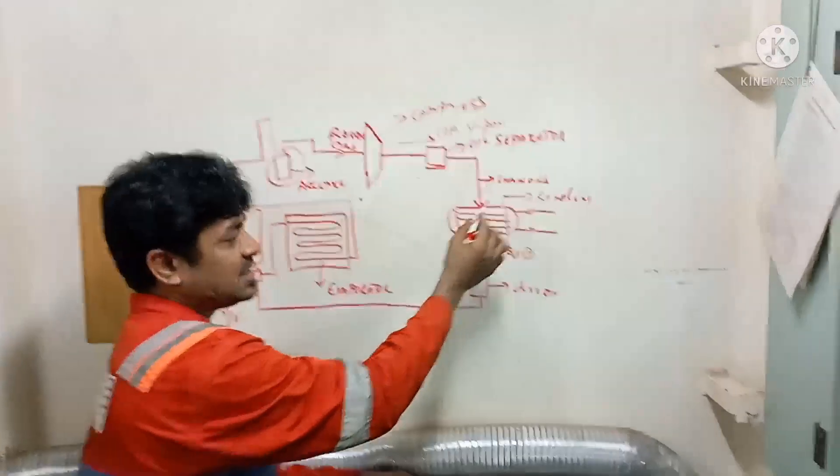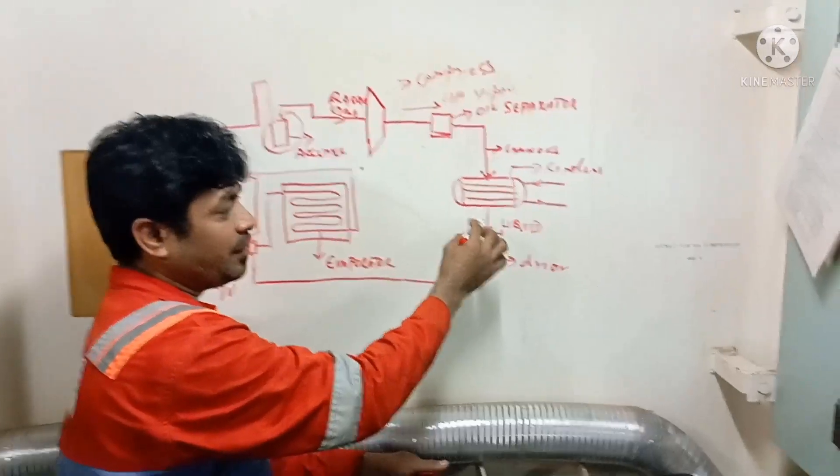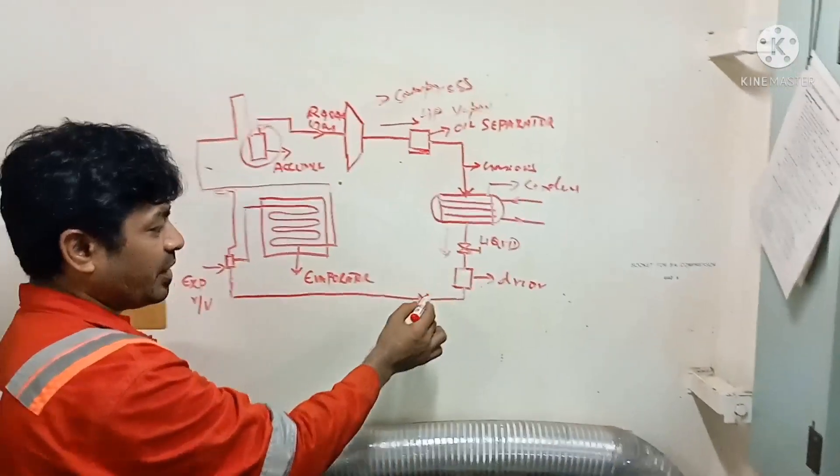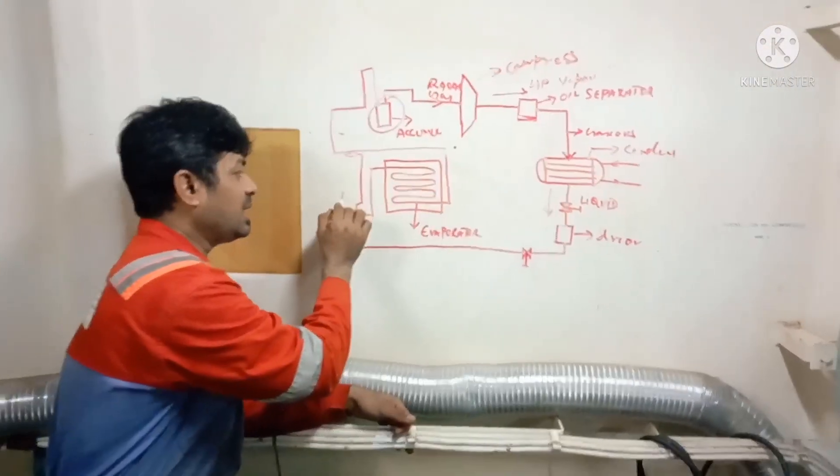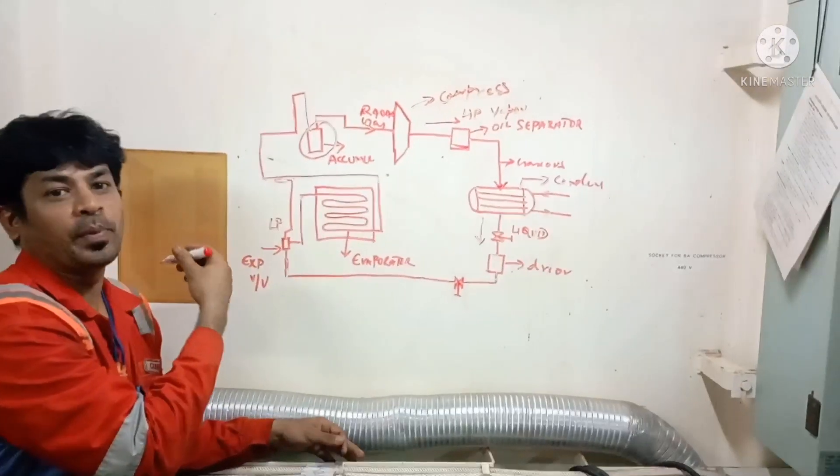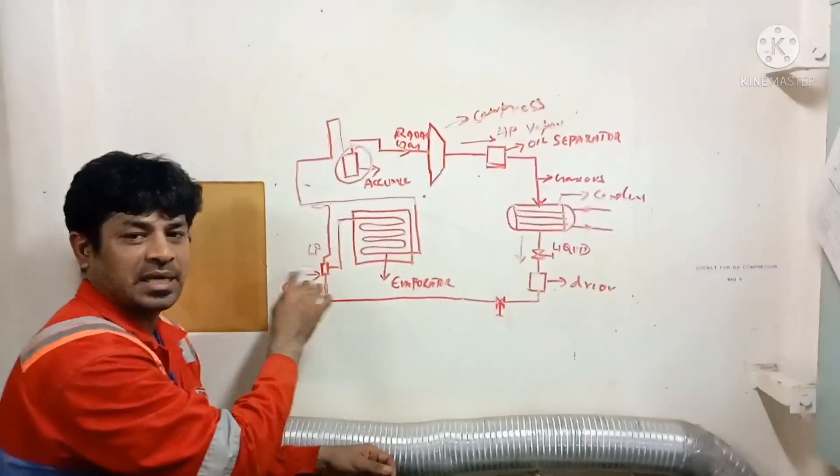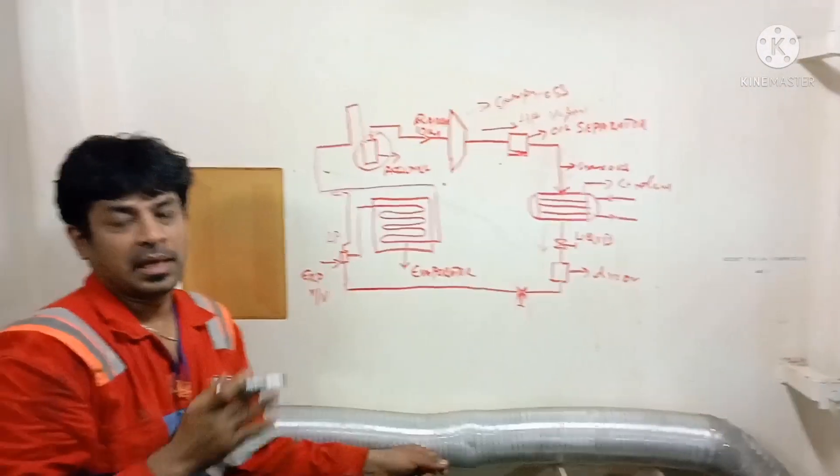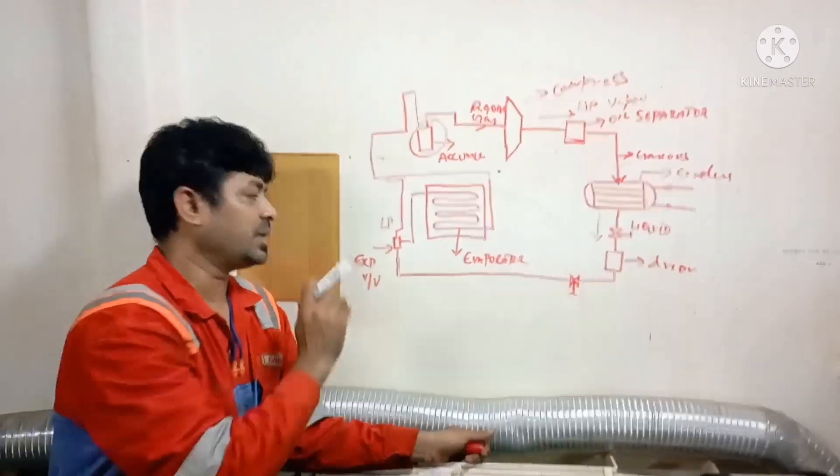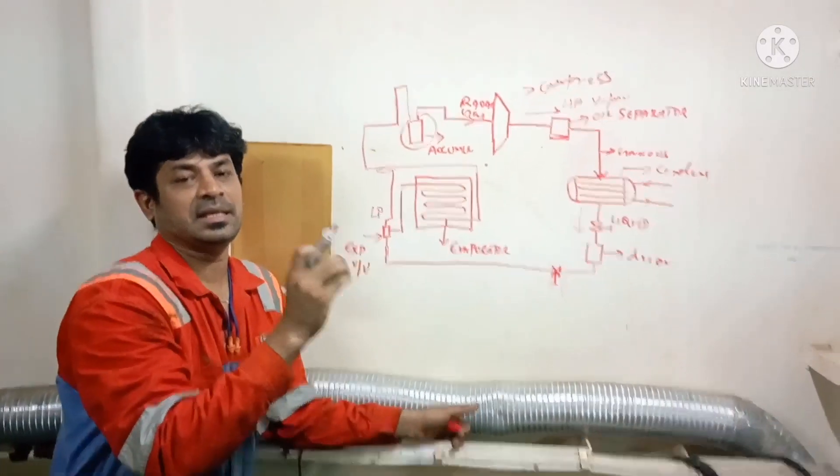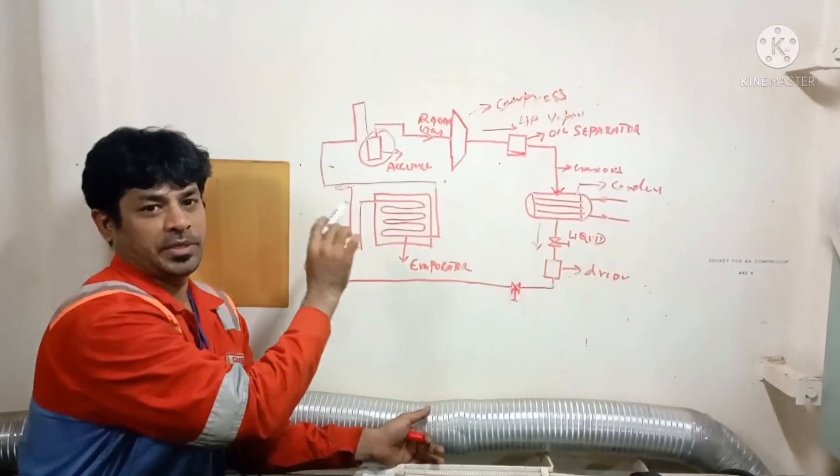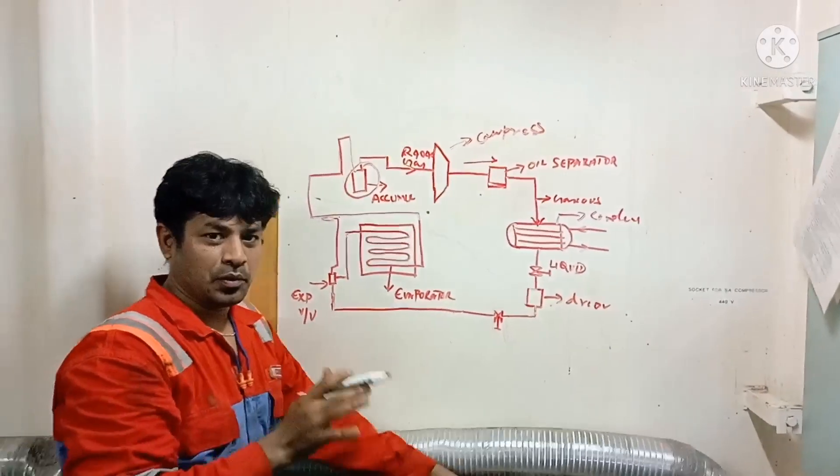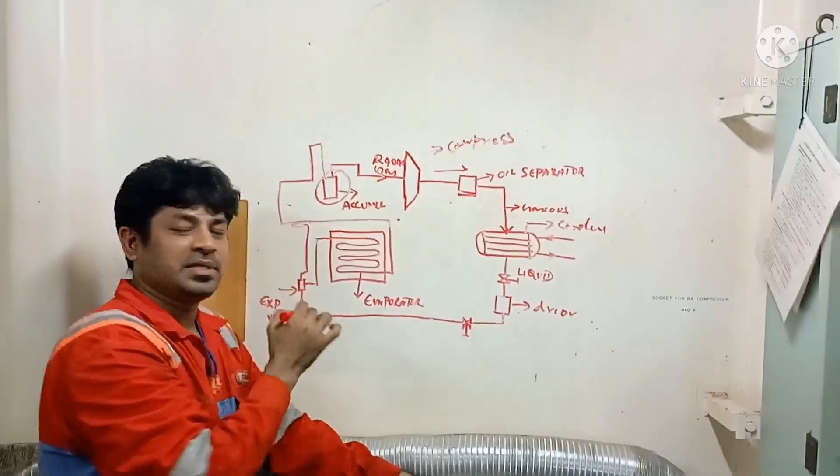Till here, it will be gaseous, and after the condenser, it will be a liquid stage. Once it reaches the thermostatic valve, it will start going in low pressure, because this thermostatic valve functions to regulate the gas flow. It doesn't give the gas in high pressure. From here, the gas will be in low pressure. This is how the provision refrigerator compressor works.